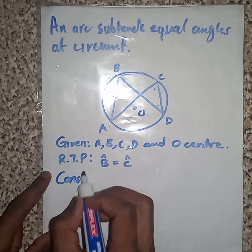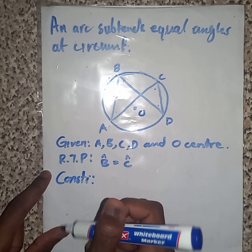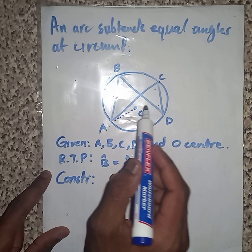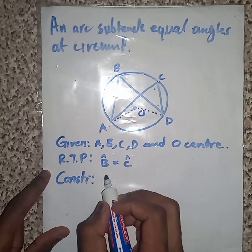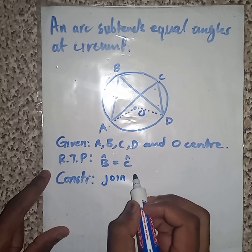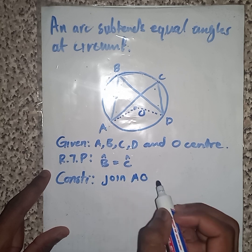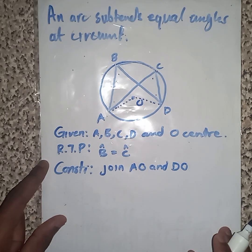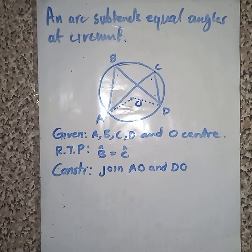Firstly, let us do some construction. We are going to join this one together with this one. We join AO and DO. So simple.